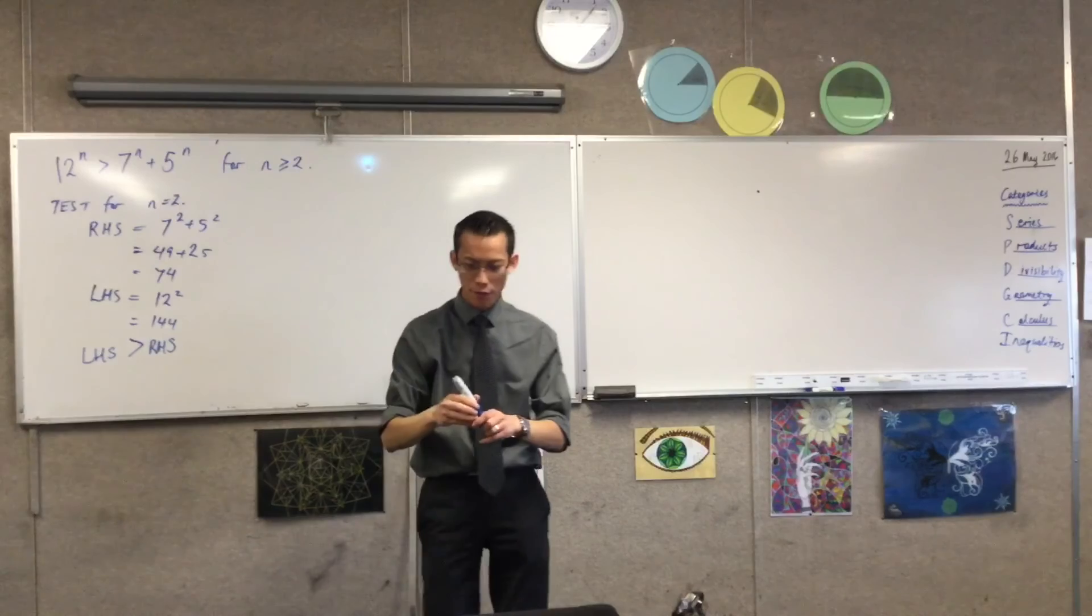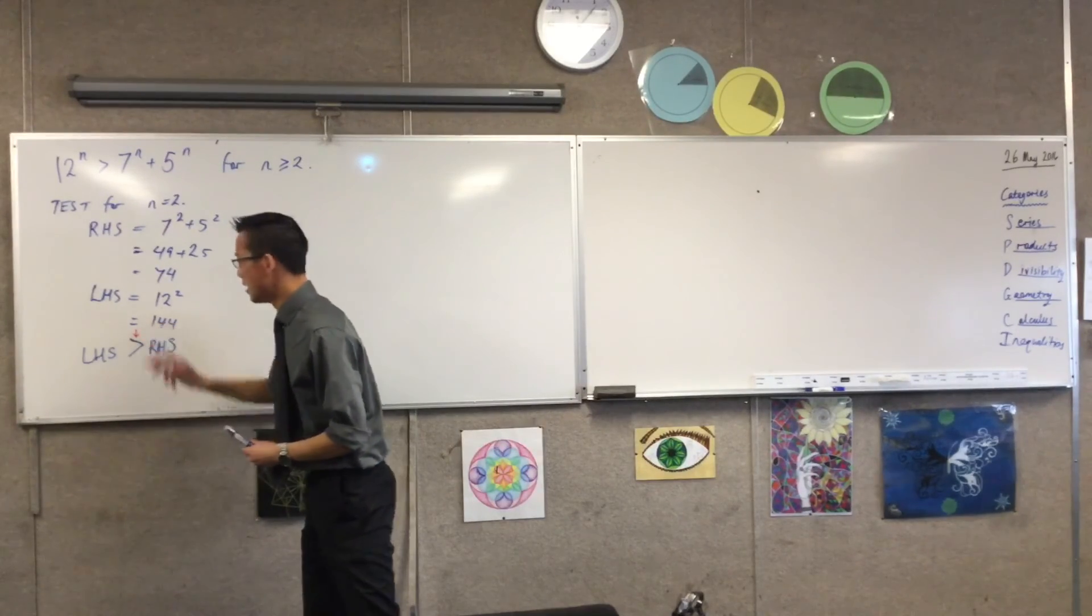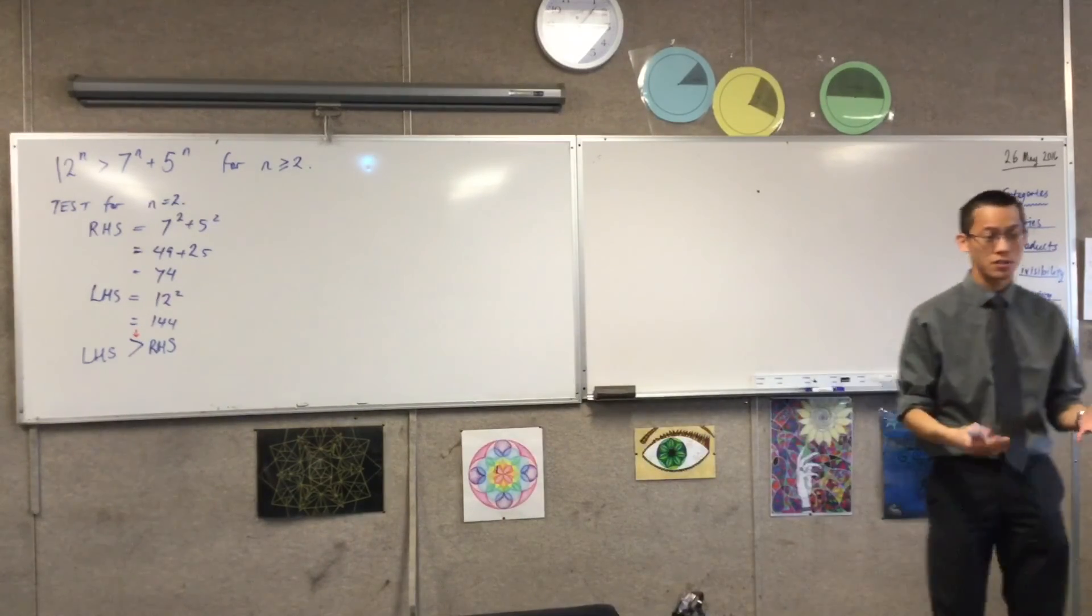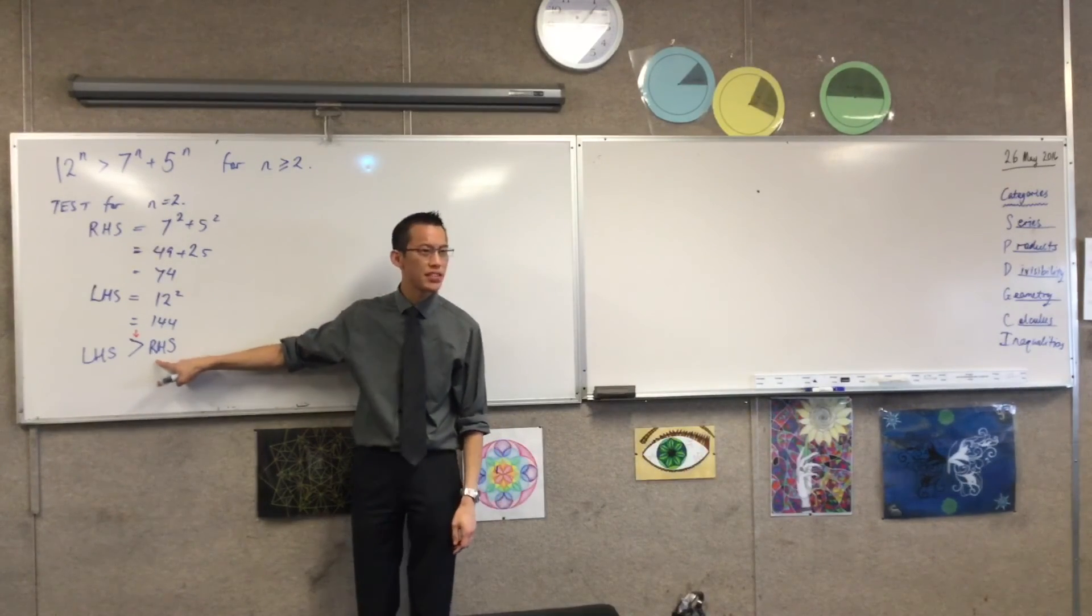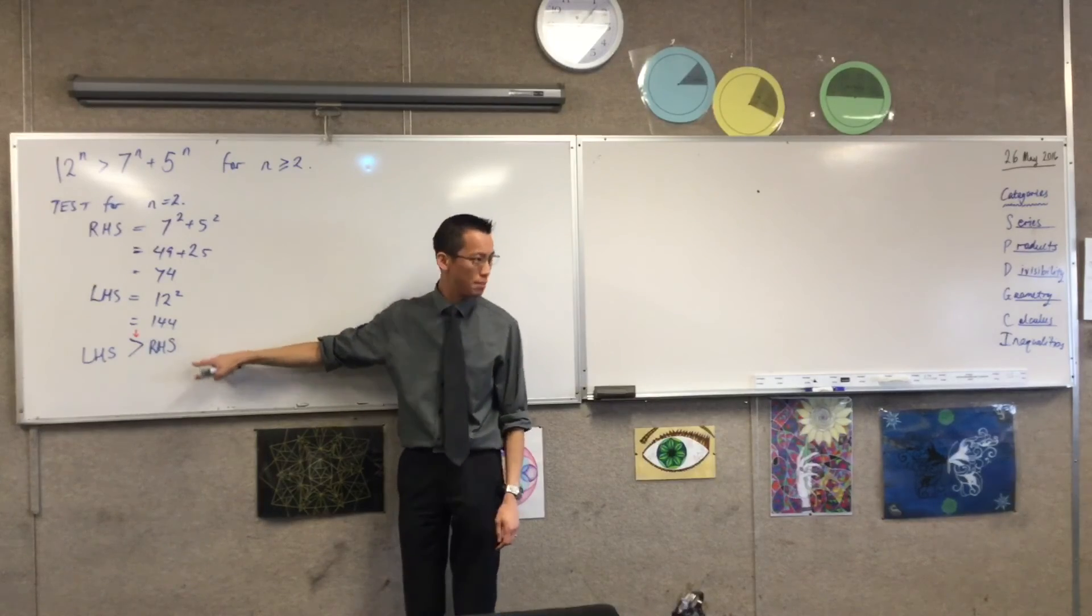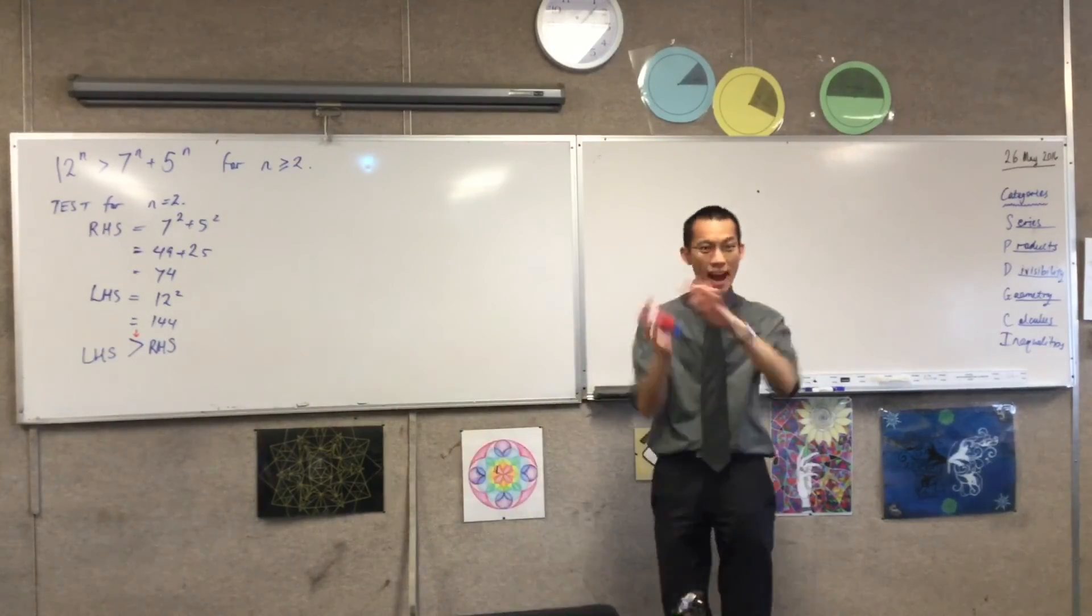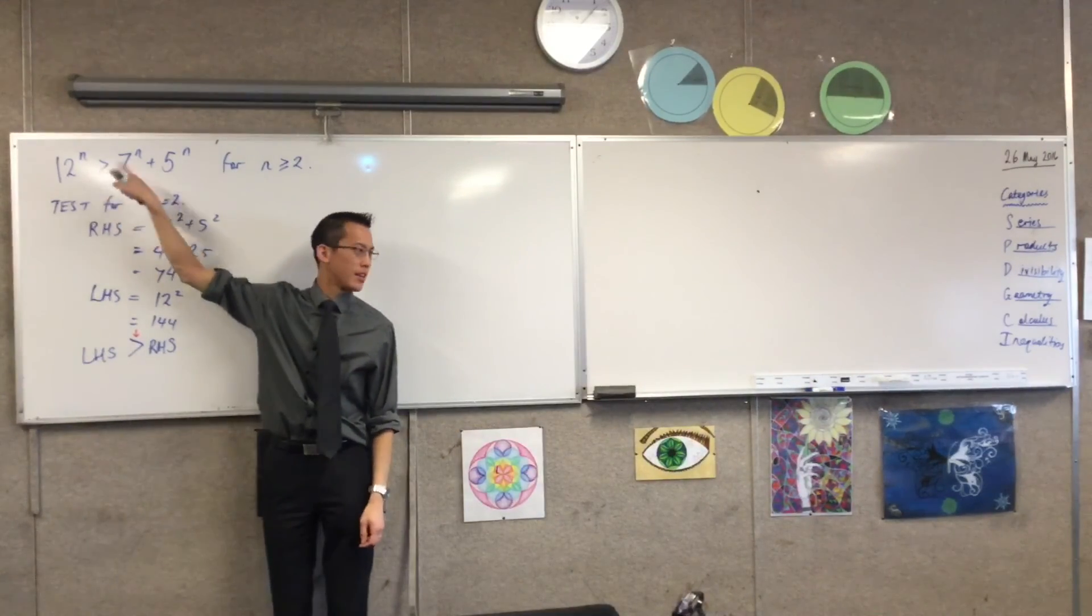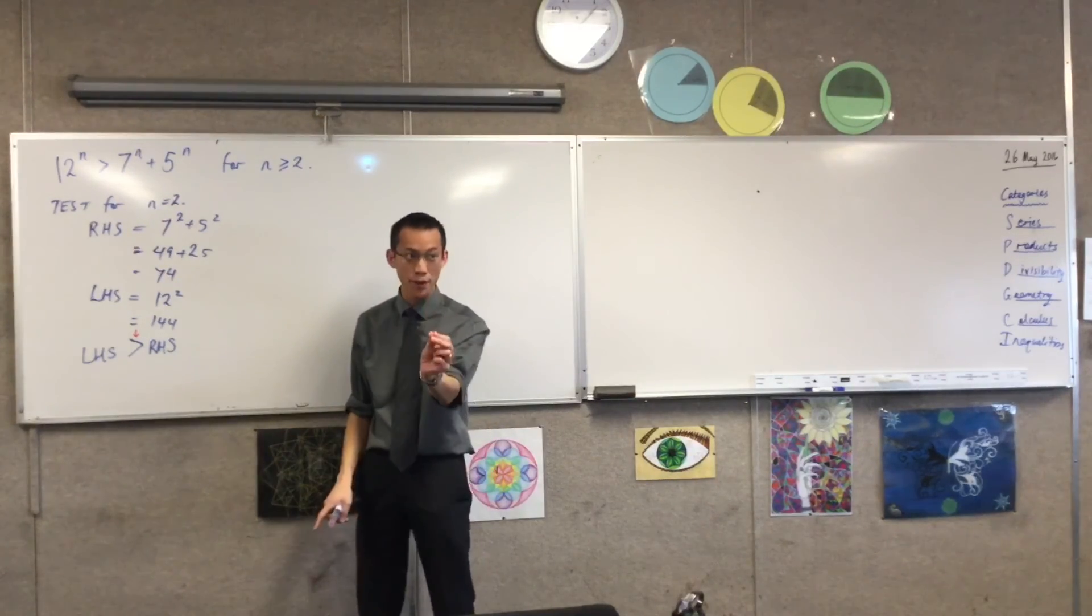Now, let me just point out, going from the second last line on the board to the last line, this is the first thing that makes inequalities different to equations, right? When I said, this right-hand side, this number is 74. This number is 74. That's because 144 is clearly bigger than that. When you're dealing with inequalities, we're going to sort of phase in and out of equations and inequalities, so long as we sort of obey what's bigger than what.